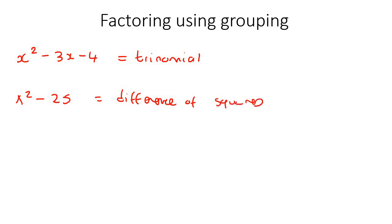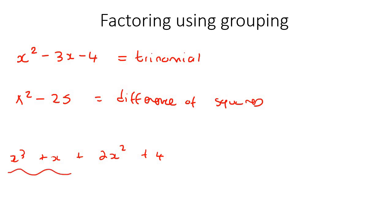But now we're going to look at four terms. For example, you could have something like x³ plus x plus 2x² plus 4. So it's typically going to be four terms — so it's not a difference of squares, and it's not a trinomial. We're going to use a process called grouping, and I'm going to show you that in this lesson.